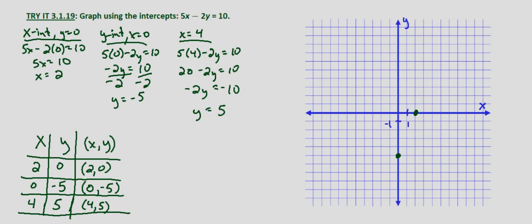And then 4, 5, so 4 to the right, 1, 2 from the origin. 1, 2, 3, 4. And then 5 up. 1, 2, 3, 4, 5.